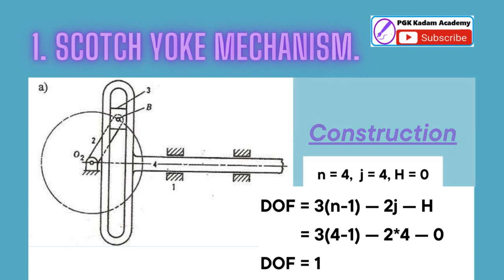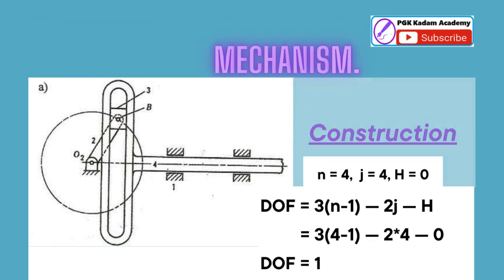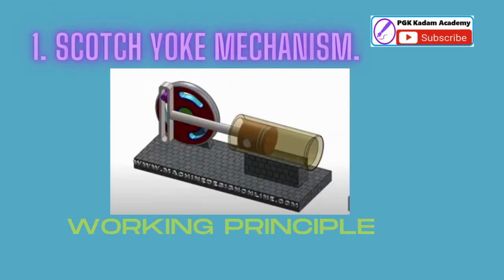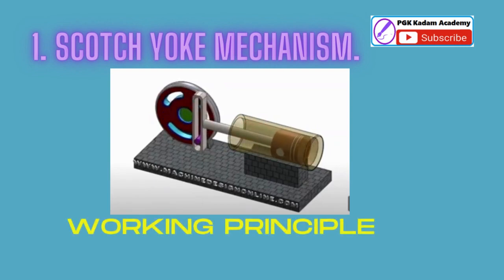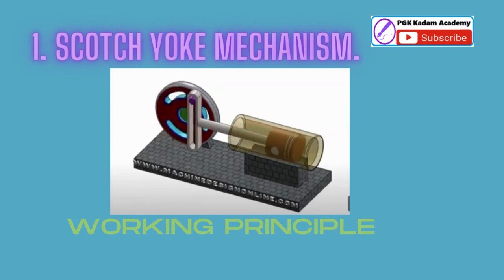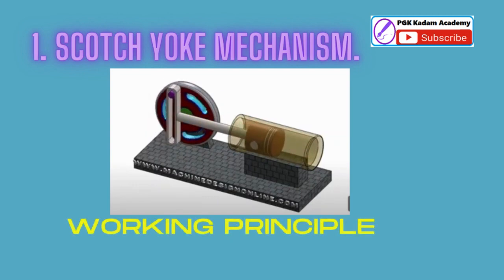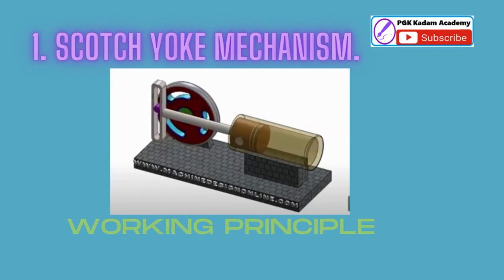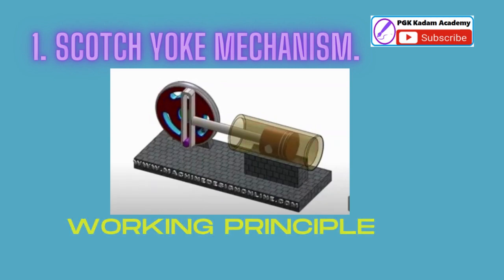Working principle: Power is supplied to the DC motor connected to the shaft. The shaft begins to rotate and subsequently the crank starts sliding the slider pin inside the yoke, and hence the mechanism starts. Since the Scotch yoke mechanism converts rotational motion into linear motion, there is a simple working principle behind it.